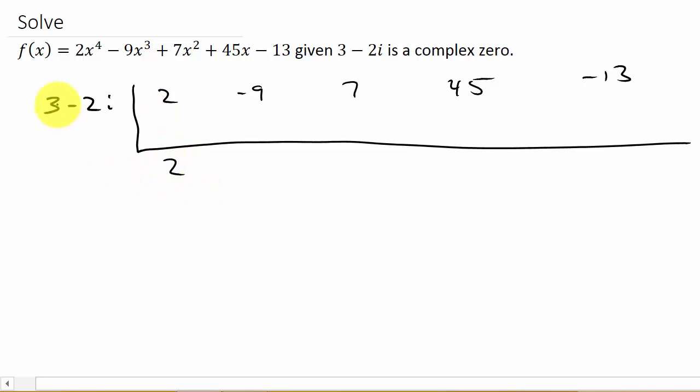So remember how to do this, bring the 2 down and then I multiply. So 2 times 3 is 6, 2 times negative 2i is negative 4i. And then I add. So this is going to be negative 3 minus 4i. Remember, negative 9 is negative 9 plus 0i. So there's my negative 3, and then 0 minus 4i is minus 4i.